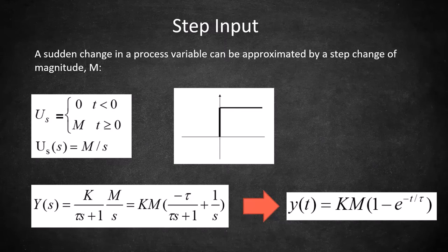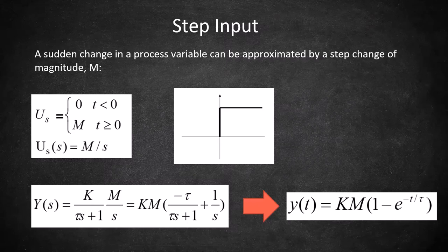Taking the Laplace transform of this function gives us u of s equals m over s. This allows us to plug it straight into the model I showed earlier, which is shown in the bottom left.